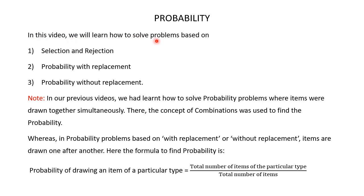In this video, we will learn how to solve problems based on selection and rejection, probability with replacement, and probability without replacement. In our previous videos, we had learned how to solve probability problems where items were drawn together simultaneously, where the concept of combinations was used. In probability problems based on with replacement or without replacement, items are drawn one after another. The formula is: probability of drawing an item of a particular type equals total number of items of that type divided by total number of items.